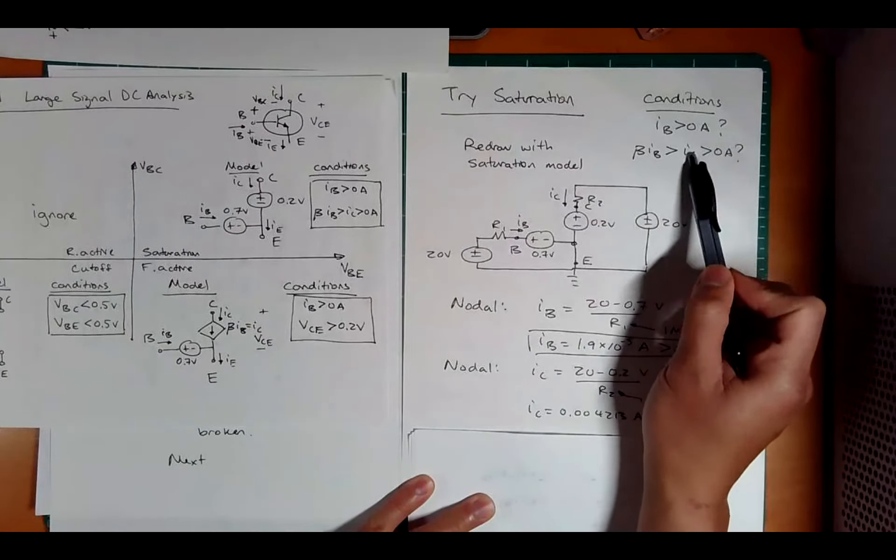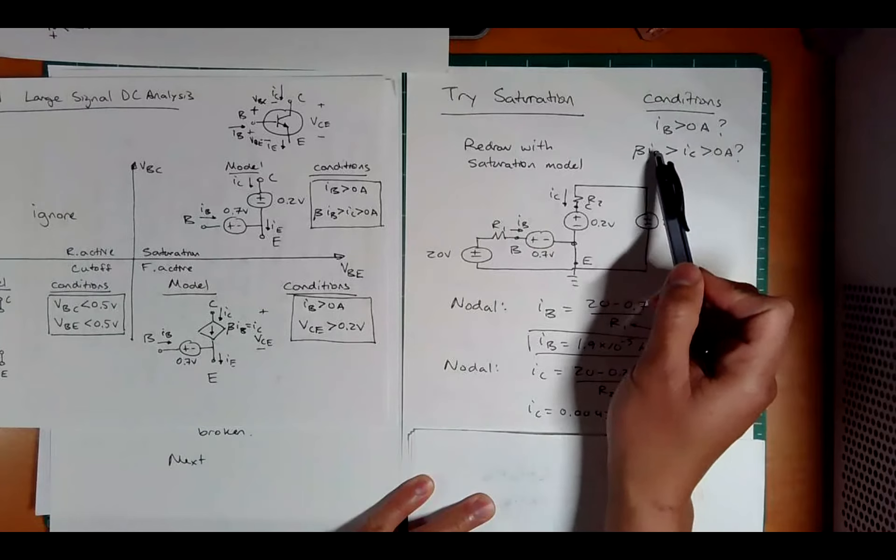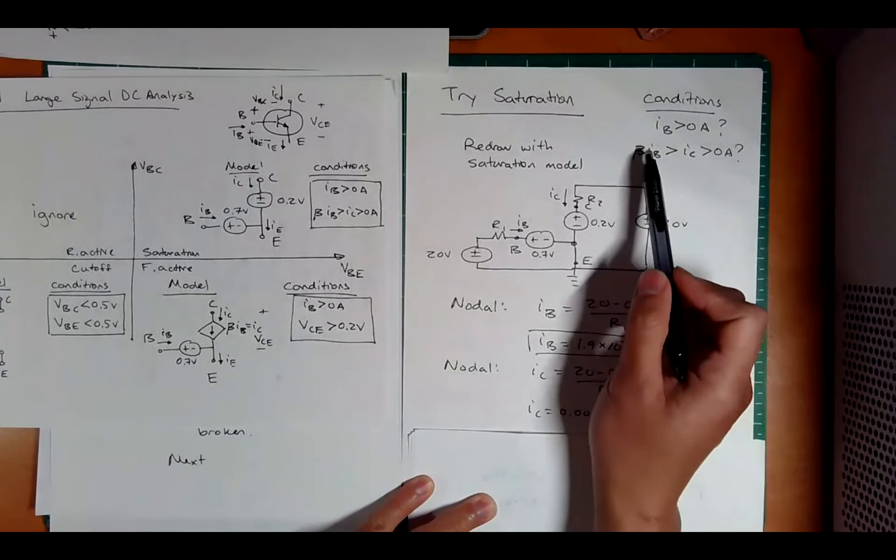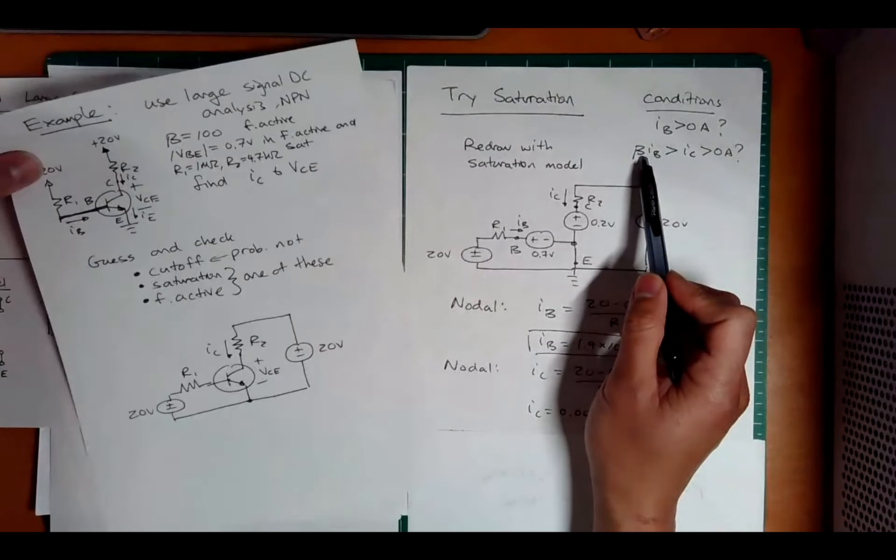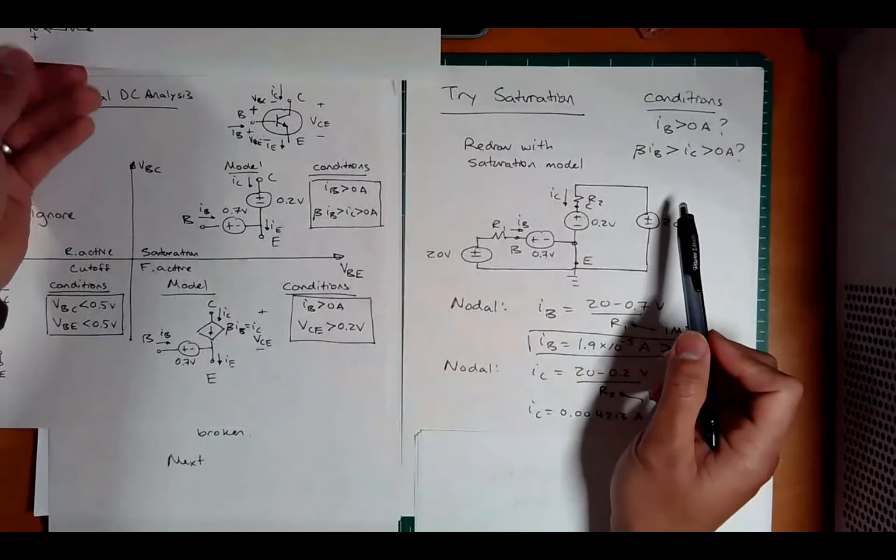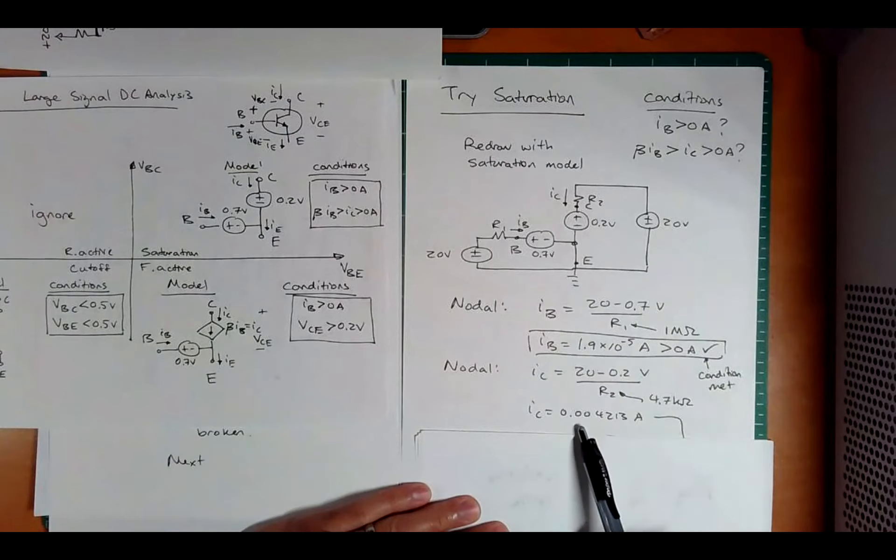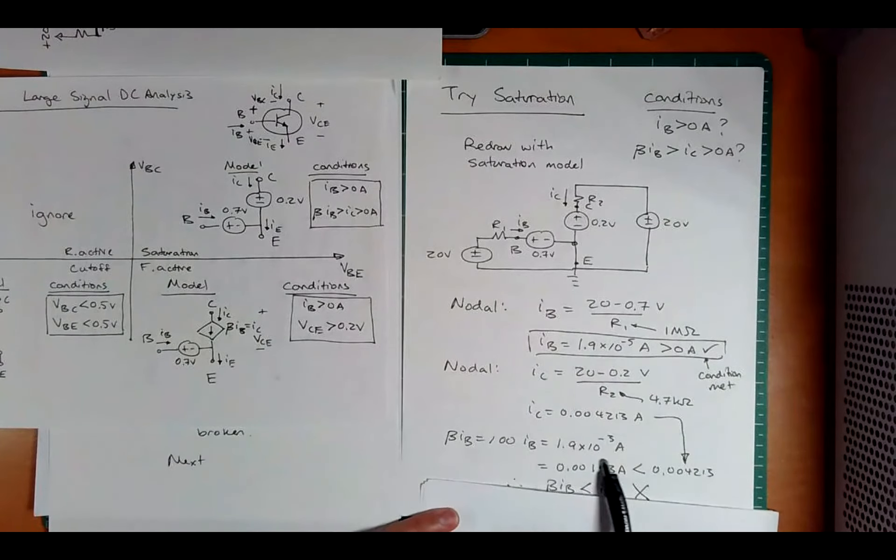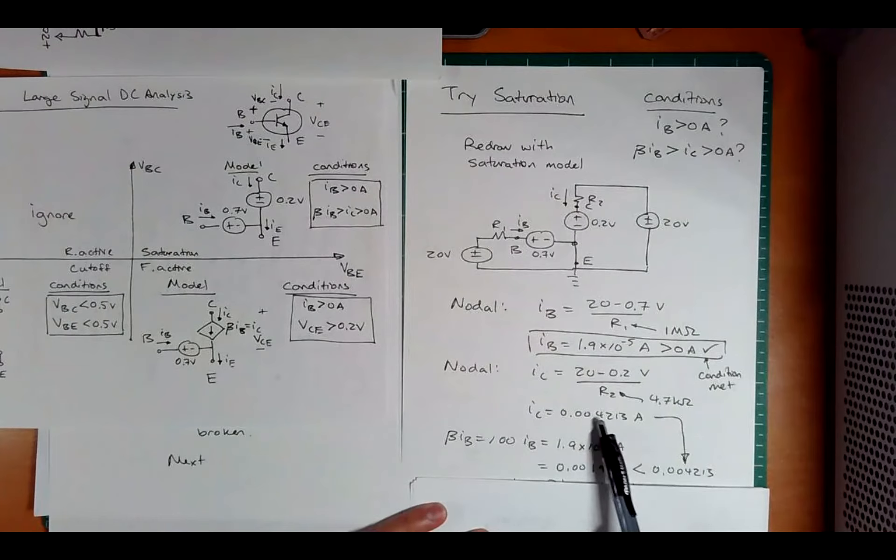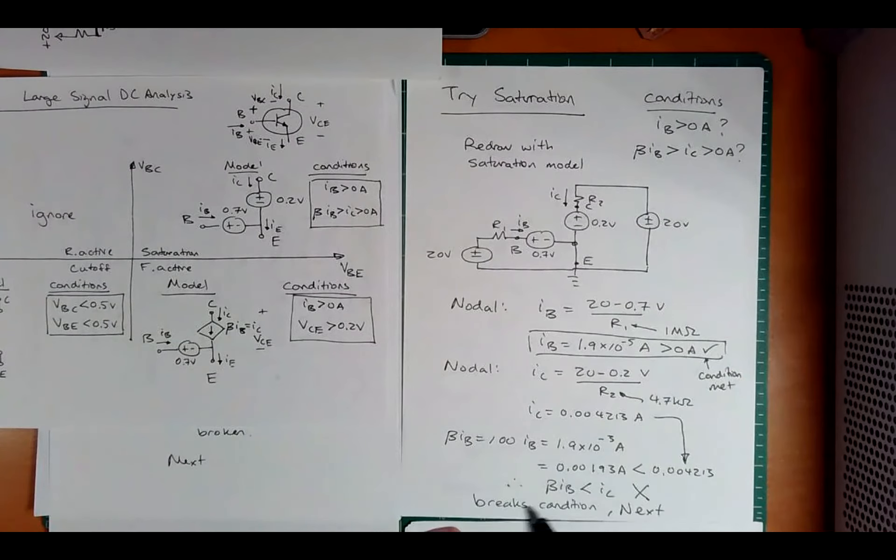Now this part is checked off. This part is checked off. What about that one? Is that satisfied? Well, the beta that was given is 100. So let's now compare 100 times this versus this. And what we see is 100 times IB is this number or 0.0019 compared to this 0.0042. It looks like IC is actually bigger. If IC is bigger, that means that we guessed incorrectly. And so try forward active.